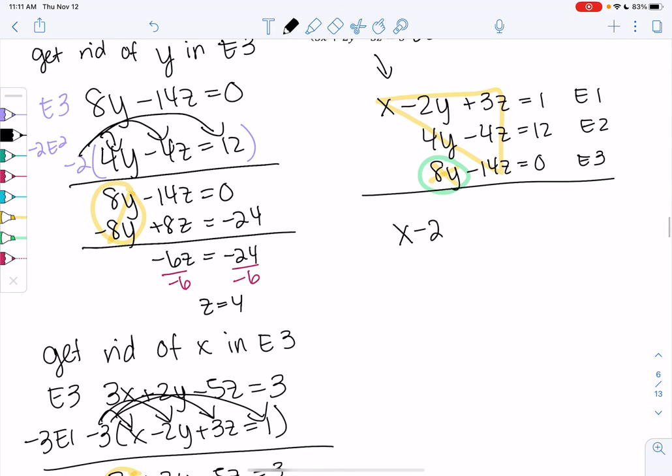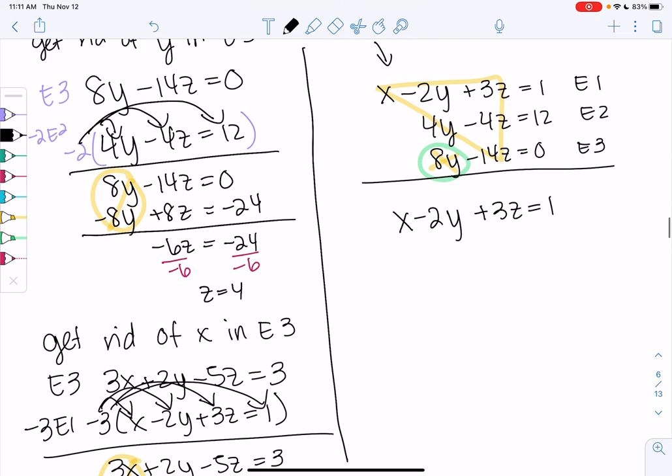So our triangular form, let's put a line down the middle to separate, we get x minus 2y plus 3z equals 1, 4y minus 4z equals 12, and then we get z equals 4. And this is triangular form.